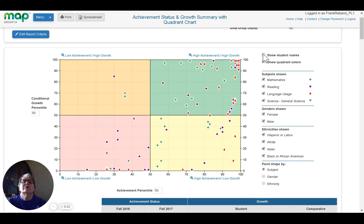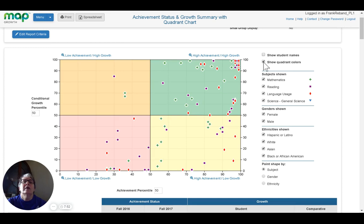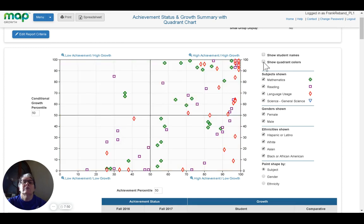If I want to see more information, I can show all of the students' names. To me, that makes it just way too crowded. So I'm going to take those back off. I can take the quadrant colors out if I want to do that. It makes it a little clearer to see some of the icons, but a little more difficult to see the differences. So I like to leave the colors on.